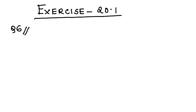Hello students, we are continuing with exercise 20.1. We have covered question number 2 and question number 3. Next, let's solve question number 6. Please read the question. The question goes like this: if the angles of a triangle are in the ratio 1:2:3, find the angles.